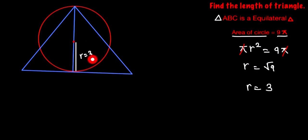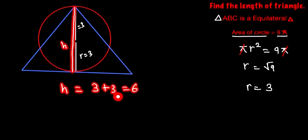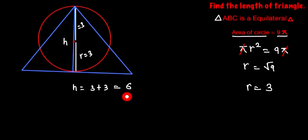So this one is also 3, and this whole one is the diameter and also the height of the triangle. So h is equal to 3 plus 3 is equal to 6.